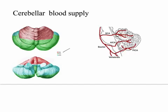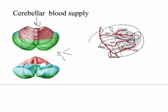Cerebellar blood supply: we have the superior cerebellar artery, the posterior inferior cerebellar artery (PICA), and the anterior inferior cerebellar artery (AICA). Our patient had a lesion that appeared to be in the area where both PICA and AICA could be involved. It would be hard to say definitively it's a blood supply issue — it could be hemorrhage from the PICA, infarction from the PICA, or possibly something else entirely.